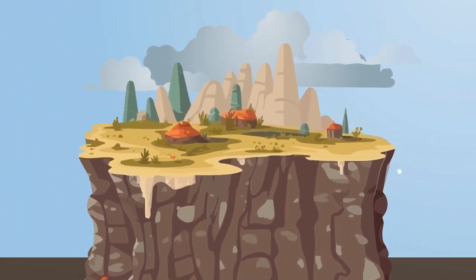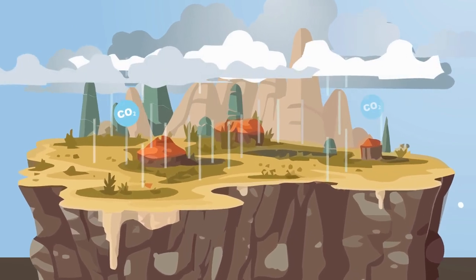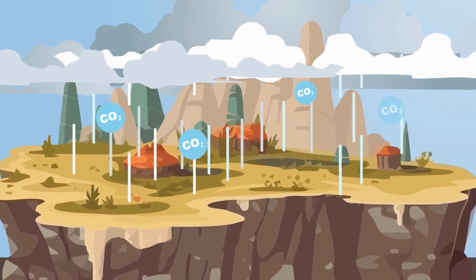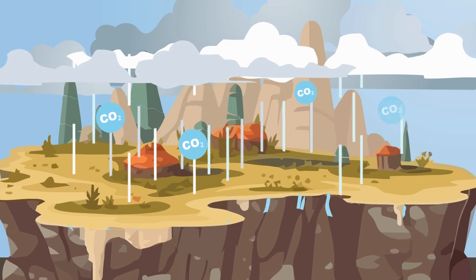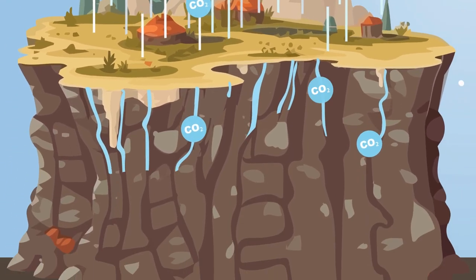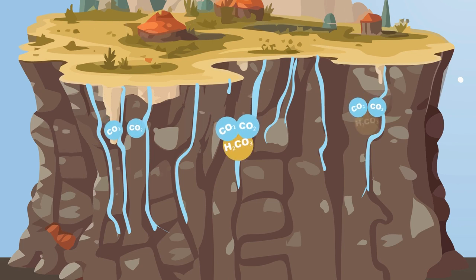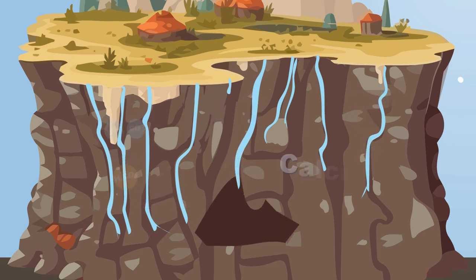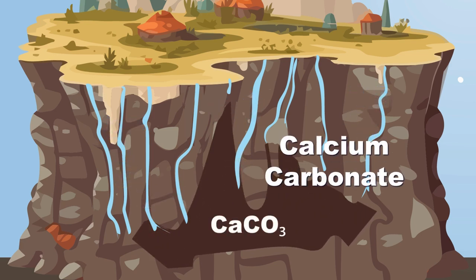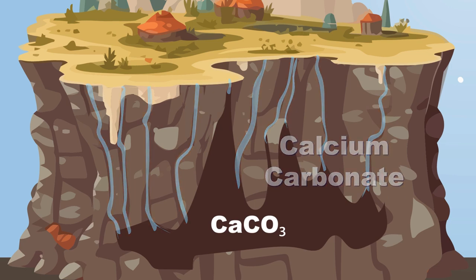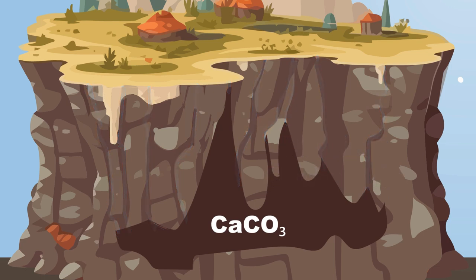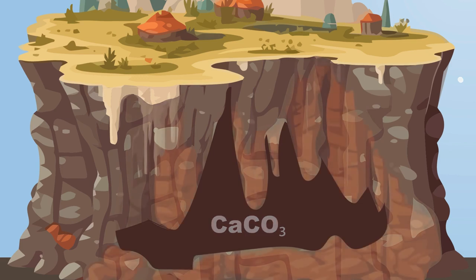Solution caves begin with droplets of rain. These droplets pick up carbon dioxide from the air. When these droplets seep into soil, they absorb more CO2 and form a weak carbonic acid in the soil they push through. When carbonic acid comes into contact with calcium carbonate, carbon atoms are broken forming bicarbonate and free calcium ions. This chemical weathering process is what makes the rocks dissolve.